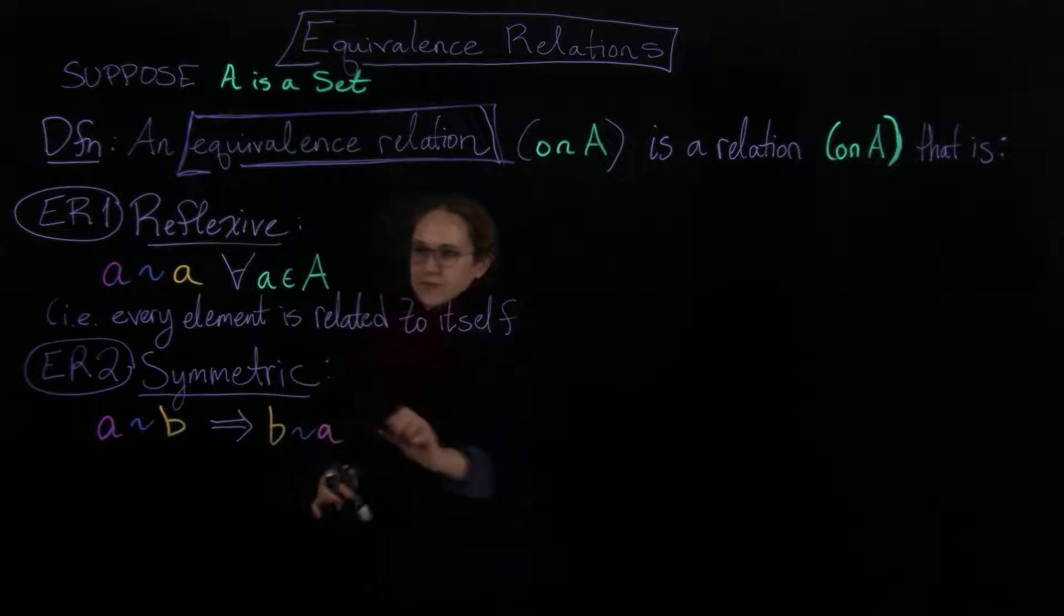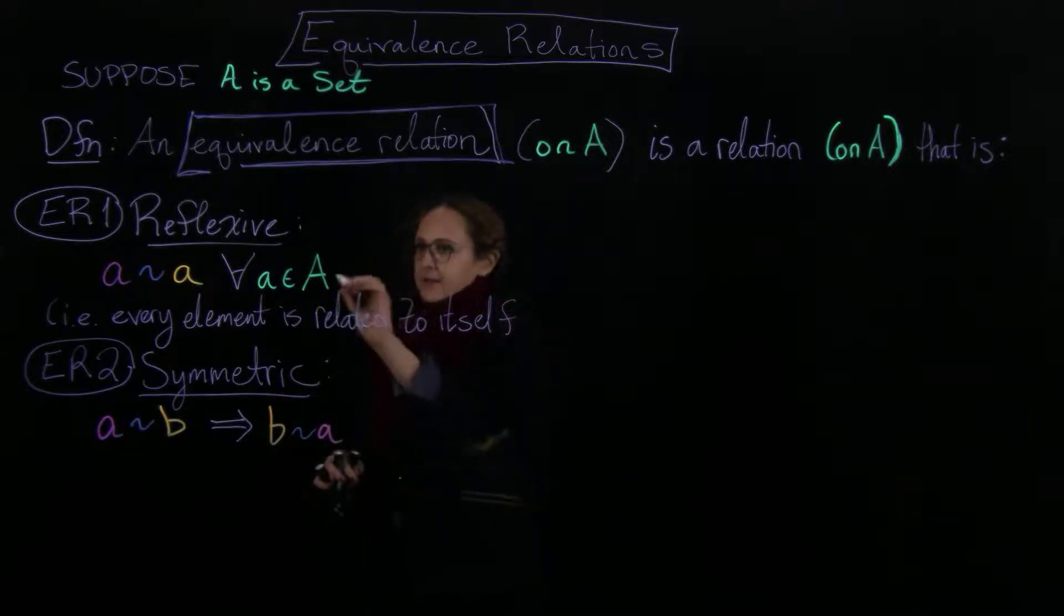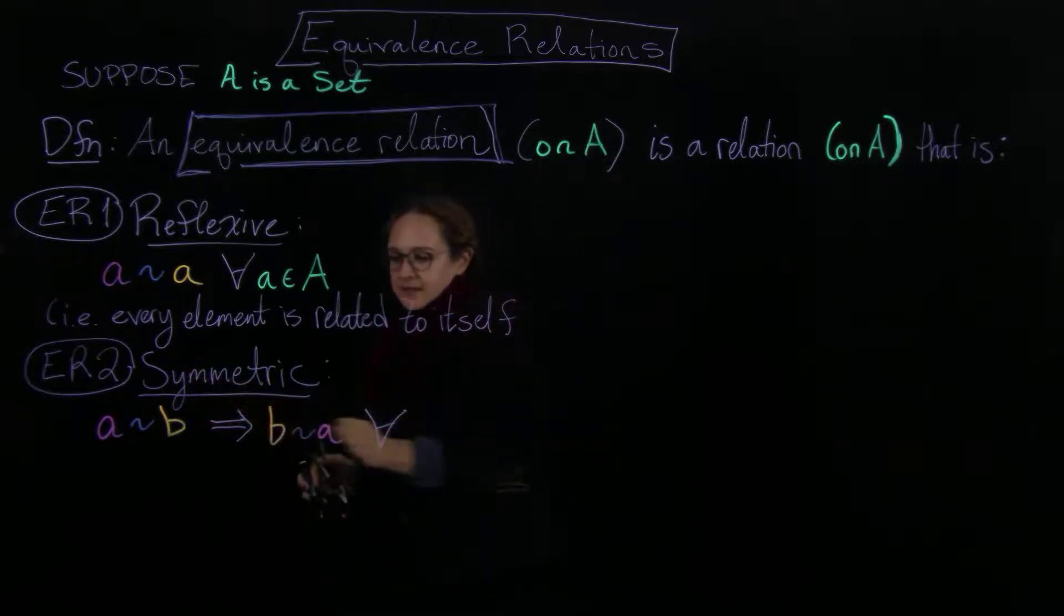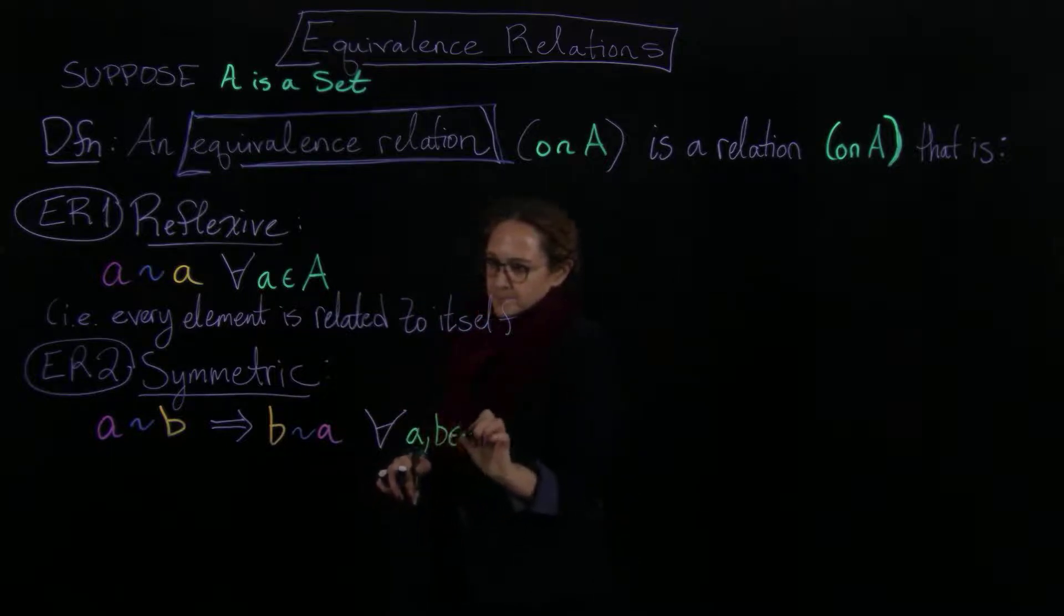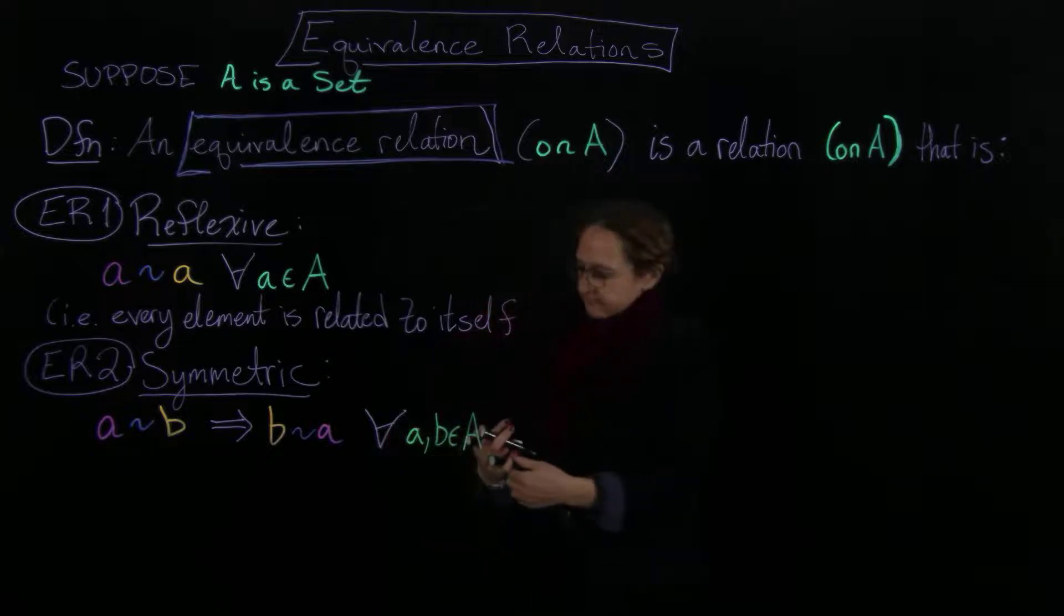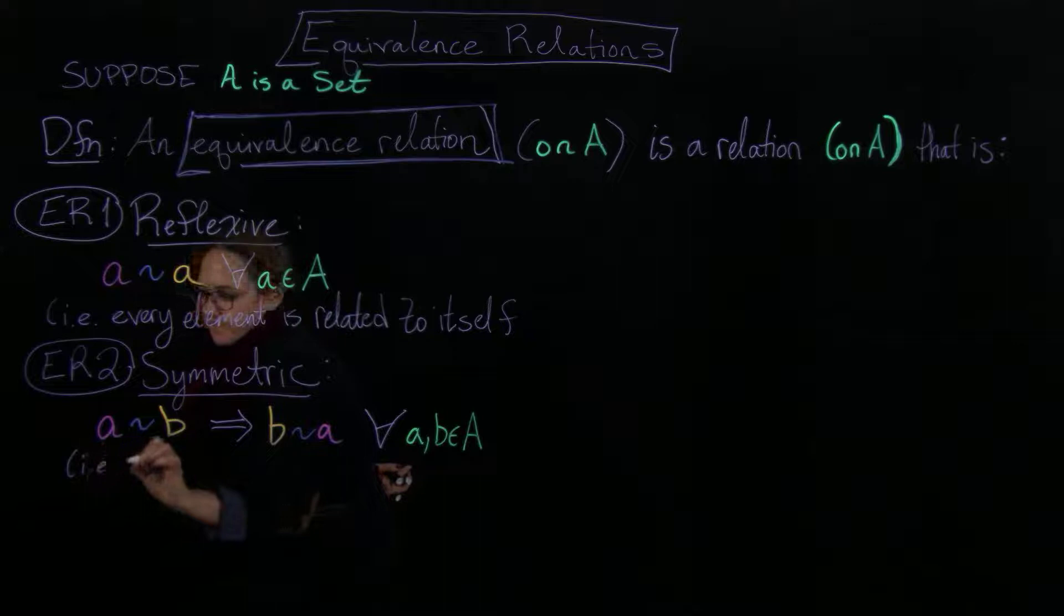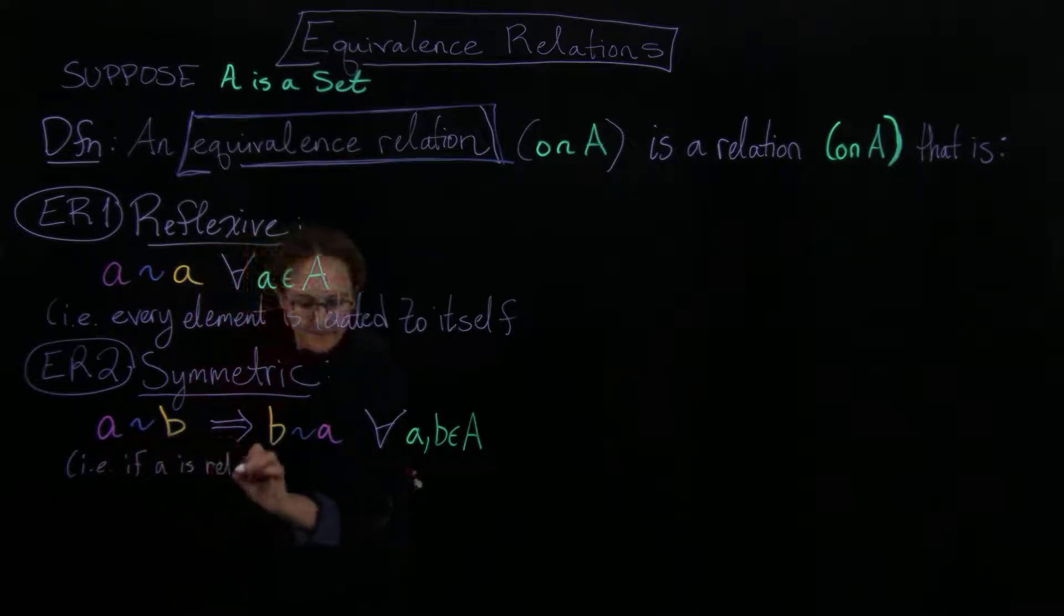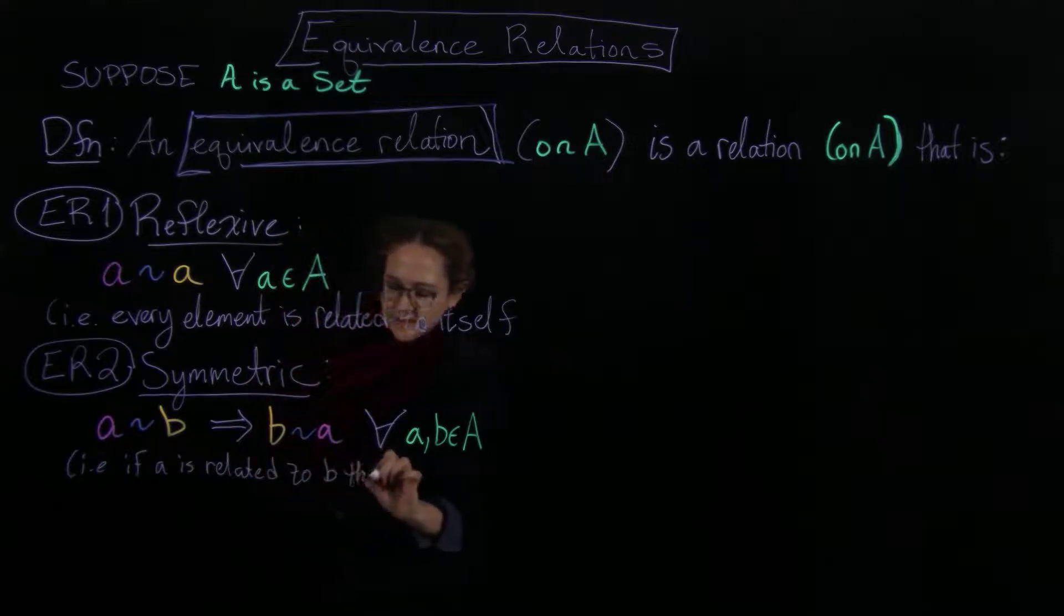All right, this works with equality. Equality is symmetric like this, so this is going to happen for all. I put these colors here just so that you can see the relationship like that, but these are elements of A. i.e., if A is related to B, then B is related to A.